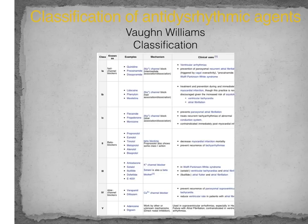The fifth and final class is a miscellaneous or undetermined class, containing the two medications adenosine and digoxin. I talked a little bit about the role of digoxin earlier, and we'll talk about adenosine here in a little bit.